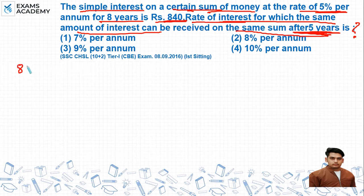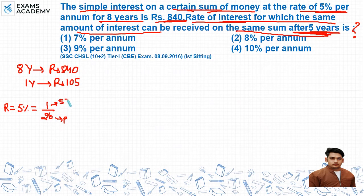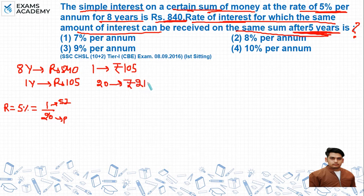सबसे पहले हमें interest given है 8 years के लिए, that is Rs. 840। अगर 1 year के लिए calculate करें तो यह होगा Rs. 105। यहां पर rate of interest given है 5%, और 5% की fraction होती है 1 by 20। अगर 20 units हमारा principal है तो 1 unit है हमारा simple interest। इस 1 unit की value हमने find किया है Rs. 105, तो 20 units की value है Rs. 2100।